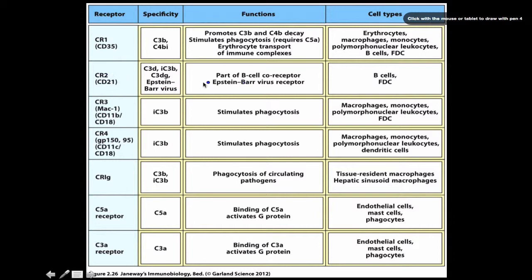B cells actually have complement receptor 2. Epstein-Barr causes mono — it's interesting how people treat mono as benign, but it infects your B cells, meaning you're not able to make antibodies when you have mono. People even thought it was causing AIDS at certain points, but now it's known to be cytomegalovirus. Complement receptor 3 binds iC3β and stimulates phagocytosis; it's also an integrin. Complement receptor 4 does the exact same thing.